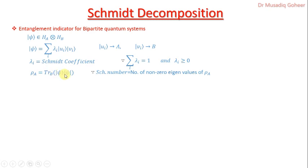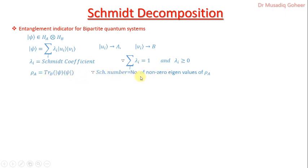The trace will remove the dynamics and degrees of freedom of the second qubit, and the reduced density matrix rho_A will be obtained. After achieving this reduced density matrix for system A, we find its eigenvalues. These non-zero eigenvalues are called the Schmidt number.